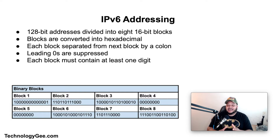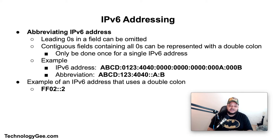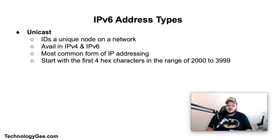Let's talk about the rules for abbreviating an IPv6 address. First, leading zeros in a field can be omitted. Second, contiguous fields containing all zeros can be represented with a double colon, but this can only be done once for a single IPv6 address. For example, the address abcd:0123:4040:... can be abbreviated as abcd:1234:4040::a:b — the double colon represents all the zeros removed, and leading zeros like in '0123' are dropped to '123'.